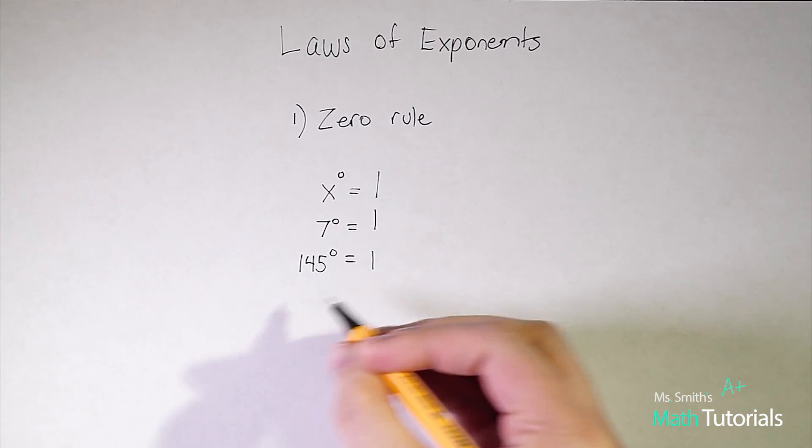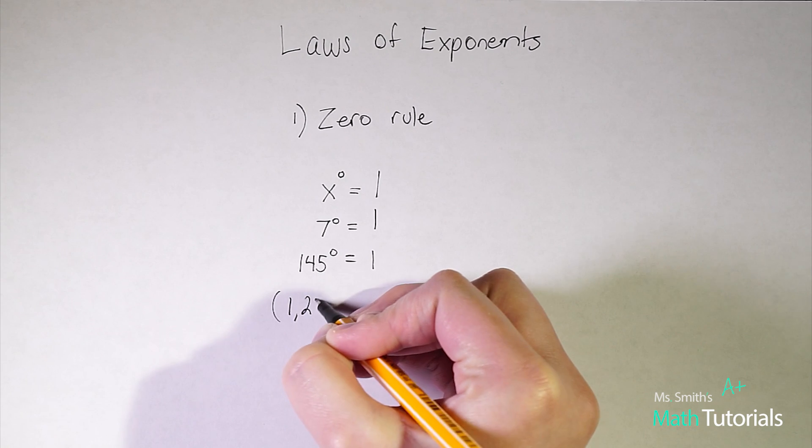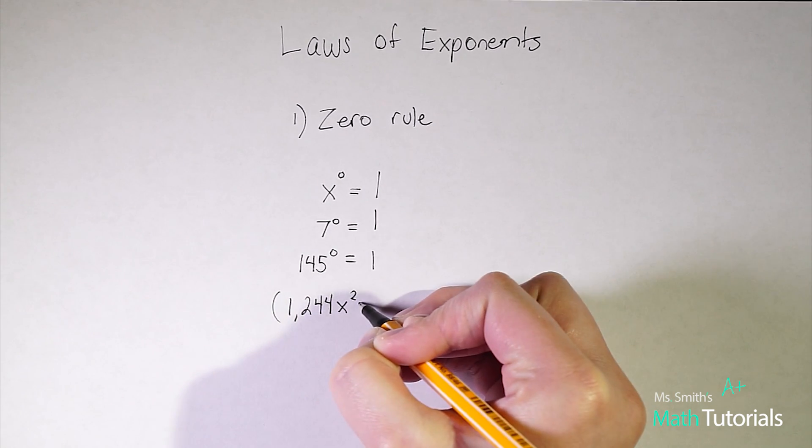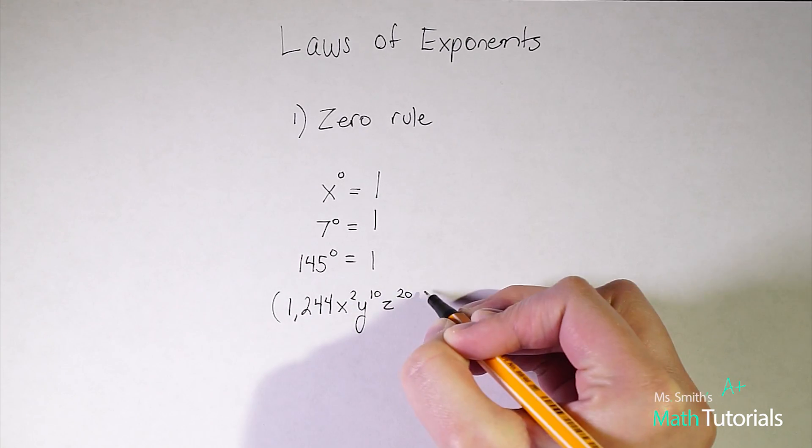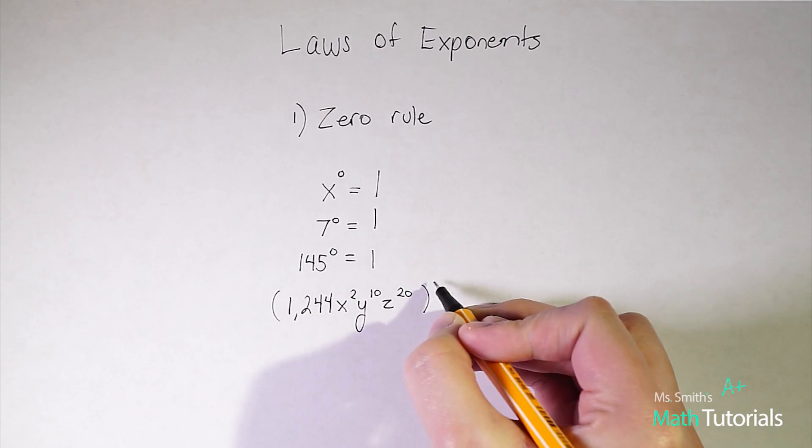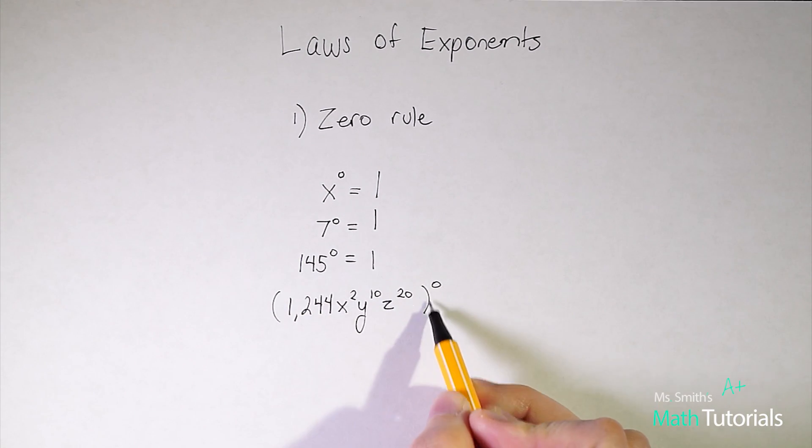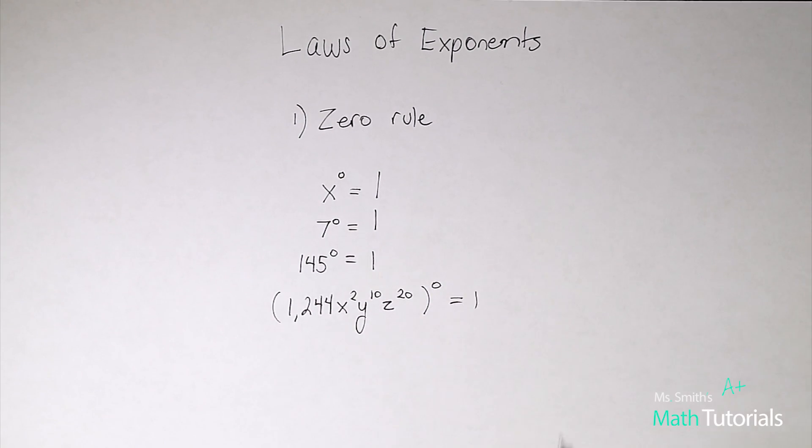Sometimes I like to throw my students for a loop and give them something that looks really complicated, like 1,244x² y¹⁰ z²⁰ all brought to the power of zero. And notice everything within the parentheses, everything within it is brought to the power of zero. So our answer would just be one.